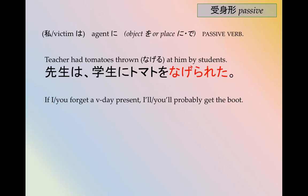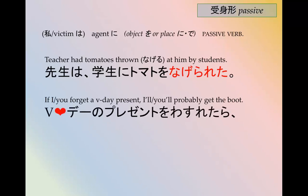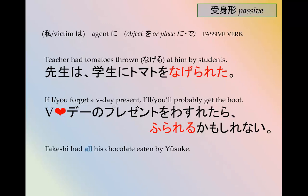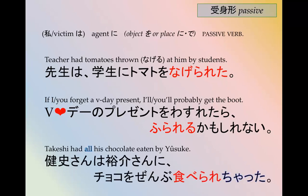If you forget a Valentine's Day present, you'll probably get dumped — バレンタインデーのプレゼントを忘れたら振られるかもしれない. 振る means 'to dump someone,' 振られる means 'to be dumped.' Takeshi had all his chocolate eaten by Yusuke — we'll use the passive plus てしまった, ちゃった form: たけしさんはゆうすけさんにチョコを全部食べられちゃった.